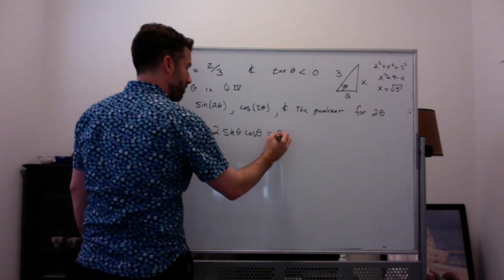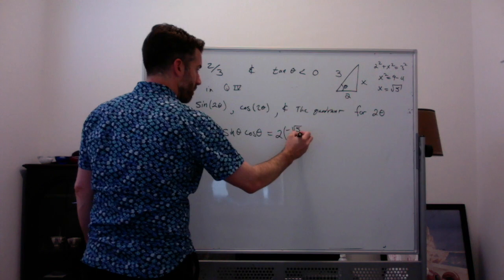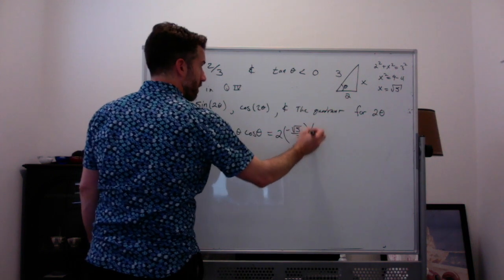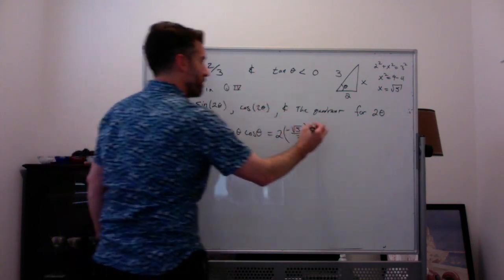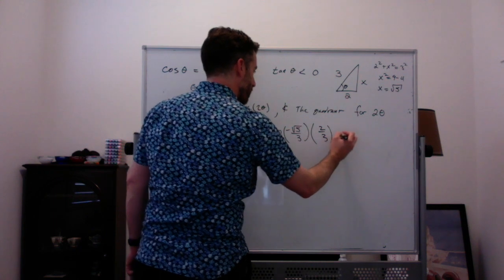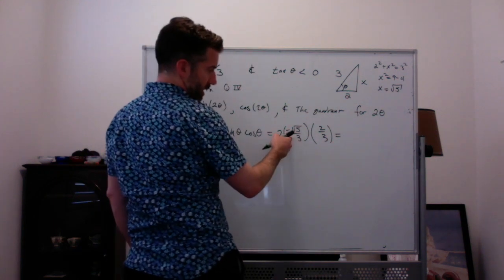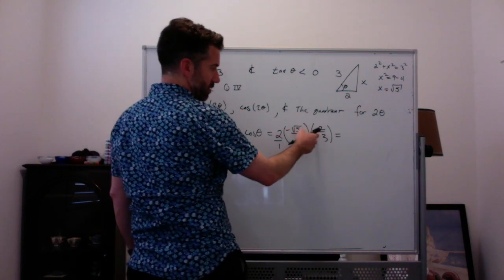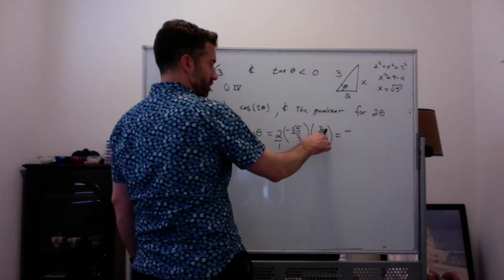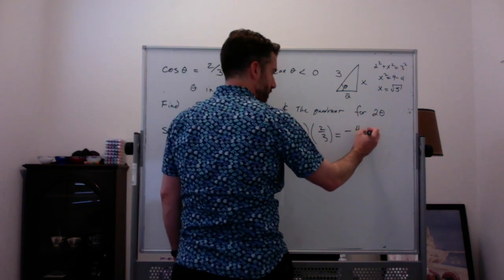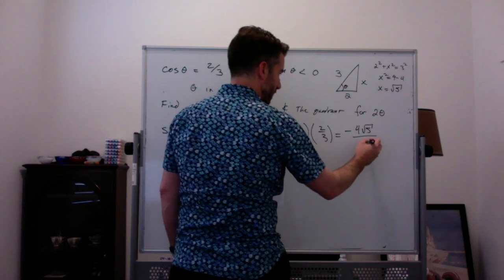So sine of 2 theta is 2 times negative root 5 over 3, times cosine of theta which is two-thirds. That gives 2 over 1 times negative root 5 over 3 times 2 over 3, with a denominator of 9.